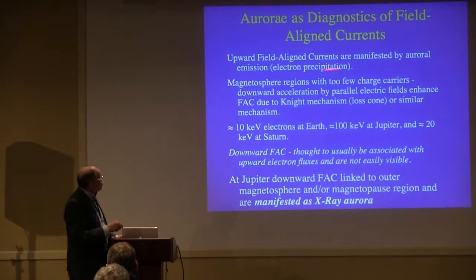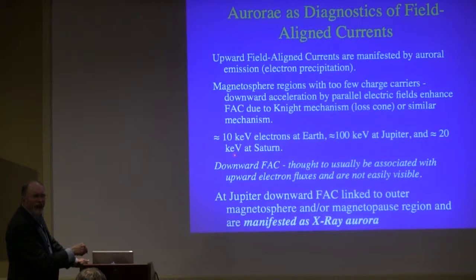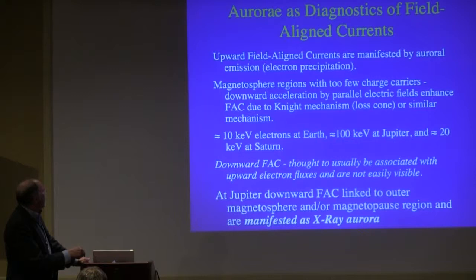At least in discrete aurora, you require parallel electric fields — a Knight-like mechanism where the current has to flow. I'm not saying anything about Alfvénic aurora, but that could contribute. So 10 keV electrons at Earth are typical, 100 keV at Jupiter on the main oval, about 20 keV at Saturn. But we're concerned with the downward field-aligned currents — they're really hard to see.